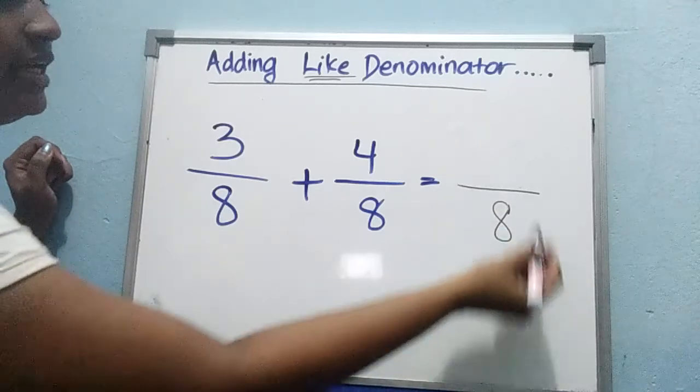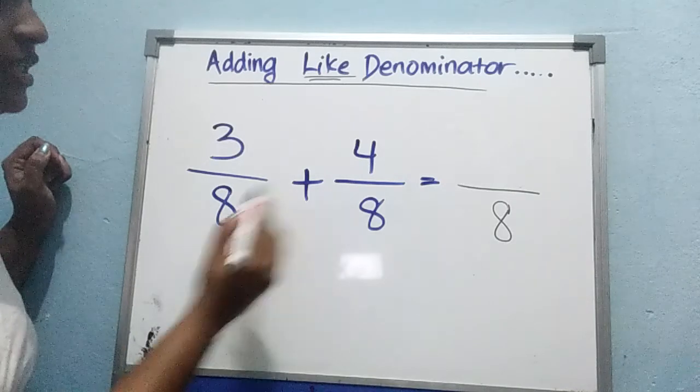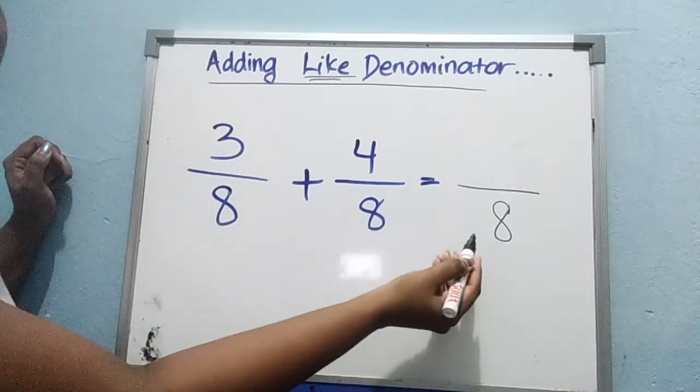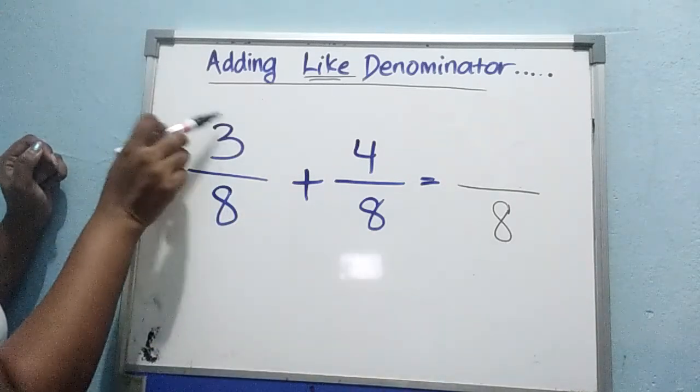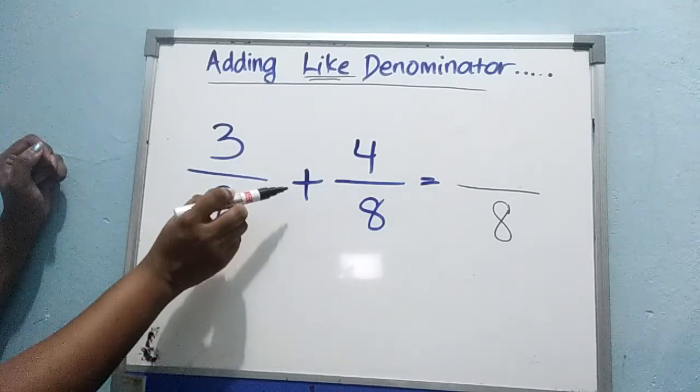So, you have 8 here, okay? Clear? Denominators, you just copy like that. Do not add. You have to add only the numerators because you have a plus here.